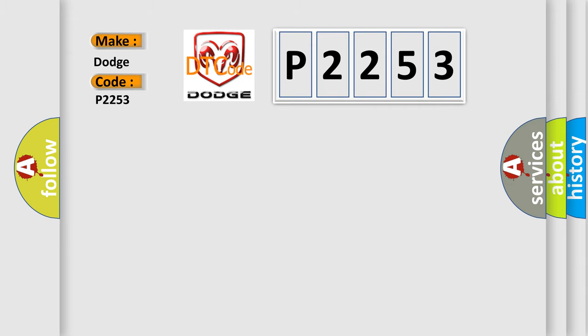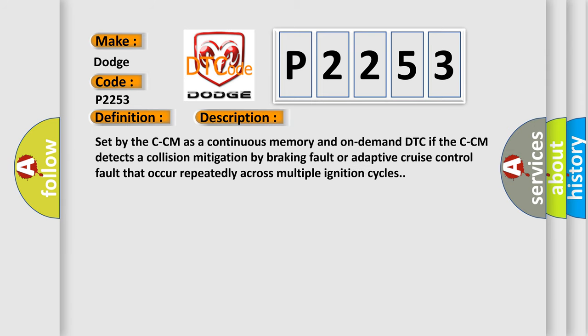The basic definition is control module signal has too many transitions or events. And now this is a short description of this DTC code: Set by the CCM as a continuous memory and on-demand DTC if the CCM detects a collision mitigation by braking fault or adaptive cruise control fault that occurs repeatedly across multiple ignition cycles.